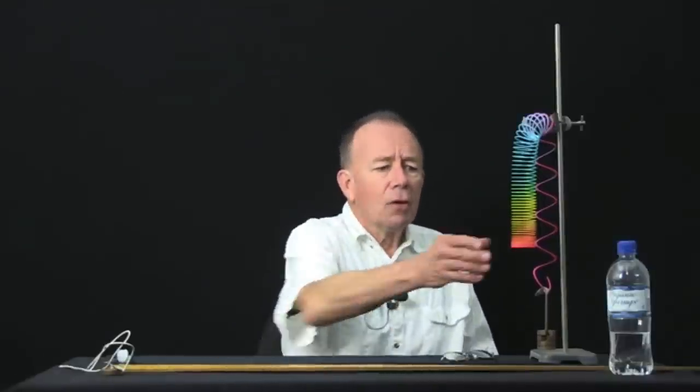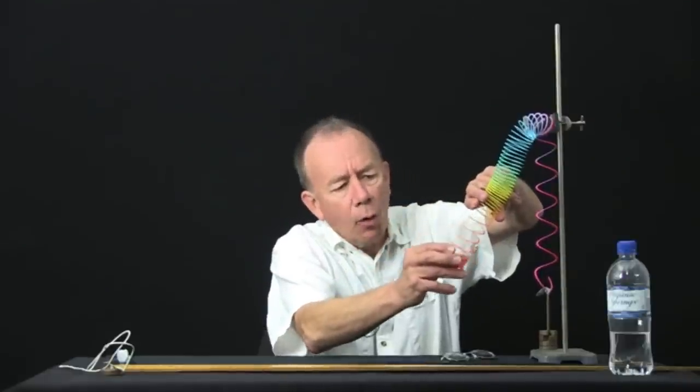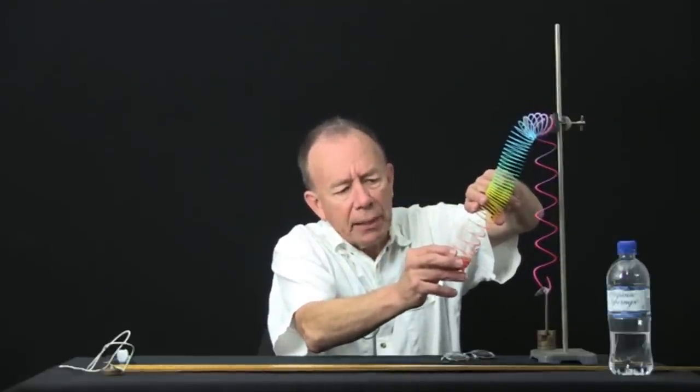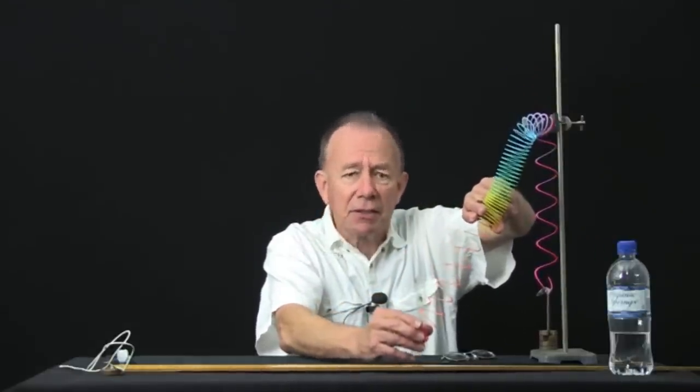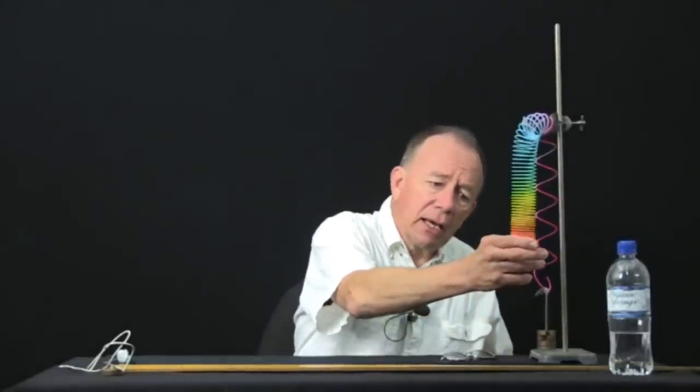For a spring, we define something called the spring constant, because a small force extends the spring a bit, and a large force extends it rather more. For many springs, the extent of the spring, the deformation of the spring, and the force applied are approximately proportional, and we call that the stiffness of the spring, or the spring constant. Let's do this little experiment.